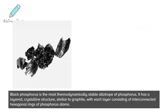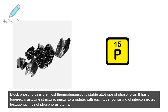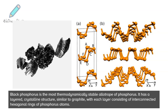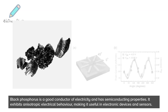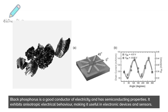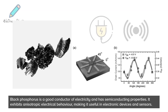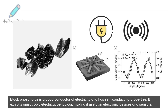Black phosphorus is the most thermodynamically stable allotrope of phosphorus. It has a layered crystalline structure, similar to graphite, with each layer consisting of interconnected hexagonal rings of phosphorus atoms. Black phosphorus is a good conductor of electricity and has semiconducting properties. It exhibits anisotropic electrical behavior, making it useful in electronic devices and sensors.